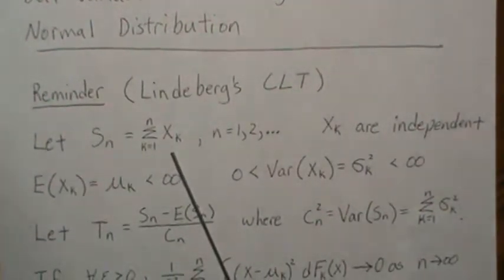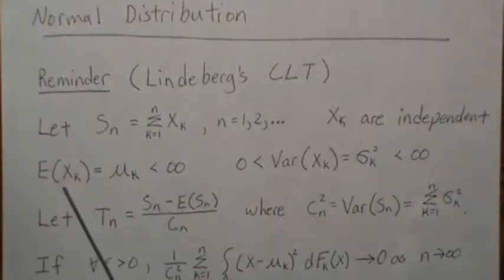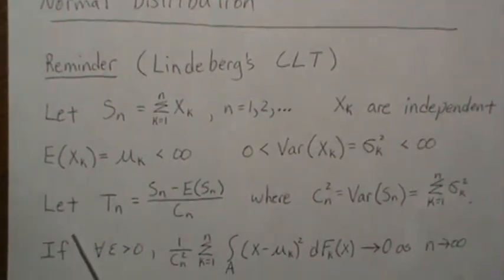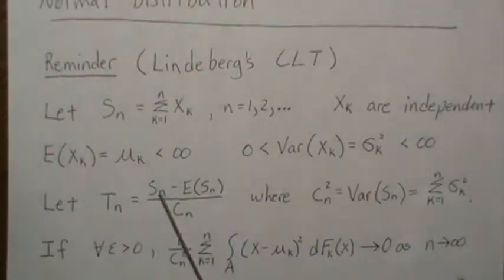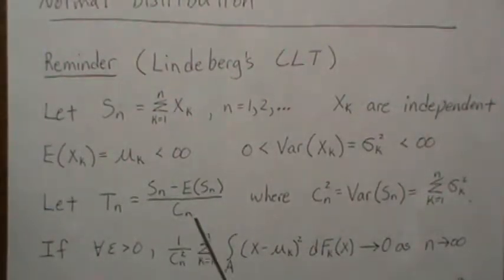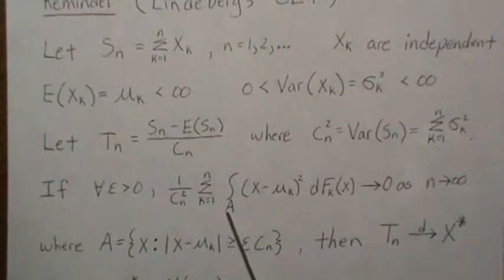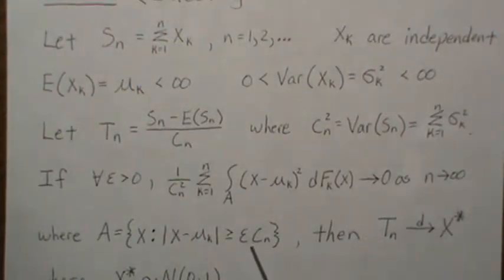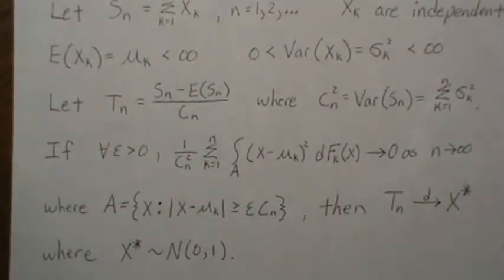If we have a sum of independent random variables — they're all independent, they might have their own mean μk, and variance σk² — and if we let Tn be the difference of the sum and the expected value of the sum divided by the standard deviation of the sum, then if this Lindenburg condition is met, the random variable Tn converges to a standard normal distribution.